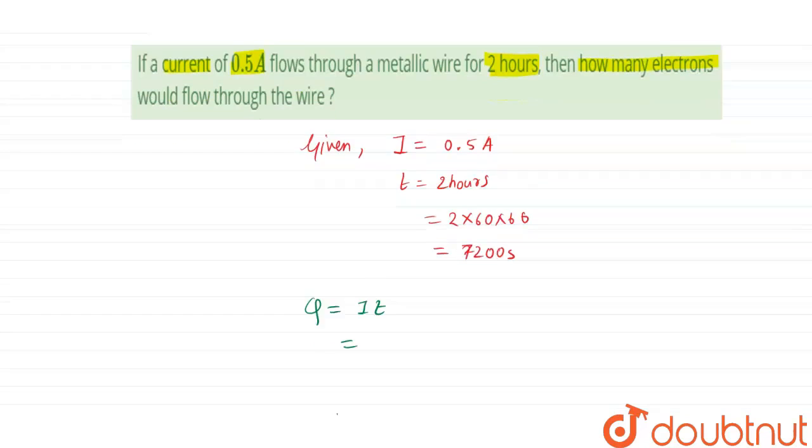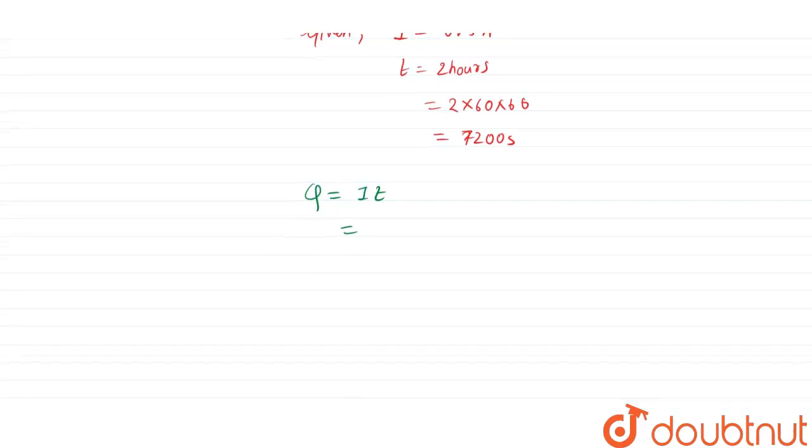So we can calculate the charge in the metallic wire. That will be 0.5 times 7200 seconds.